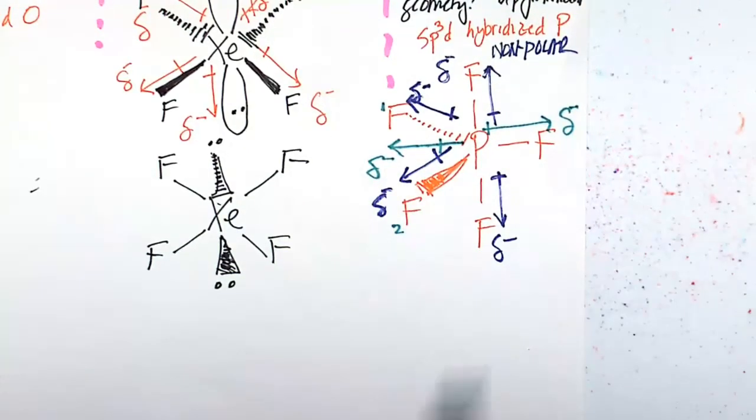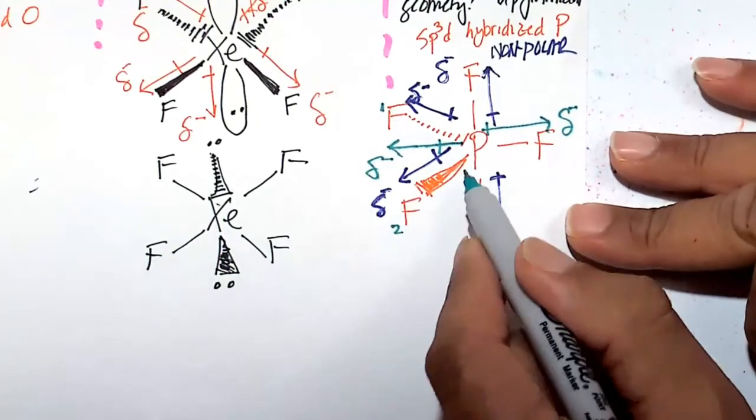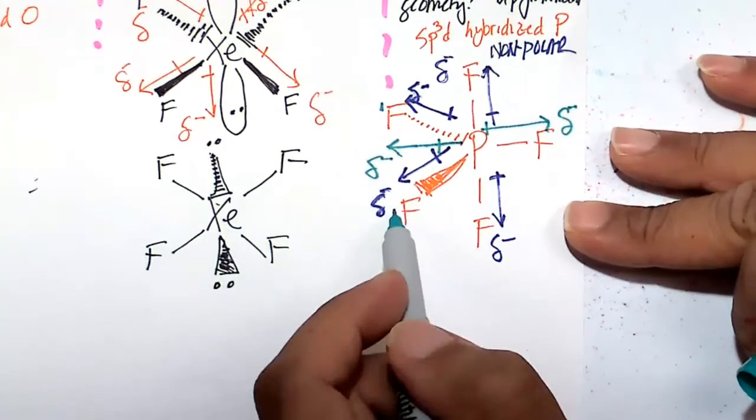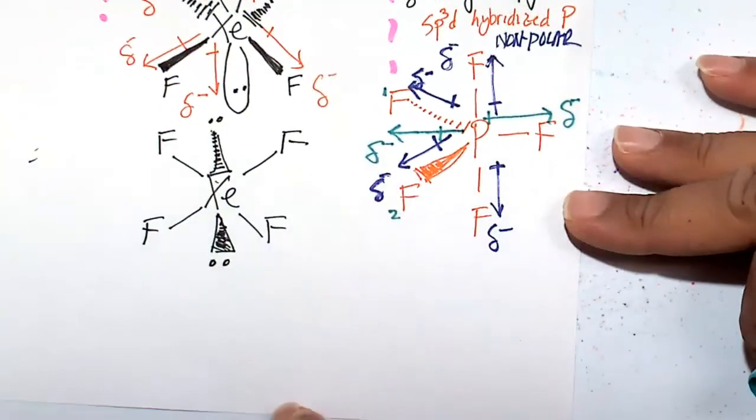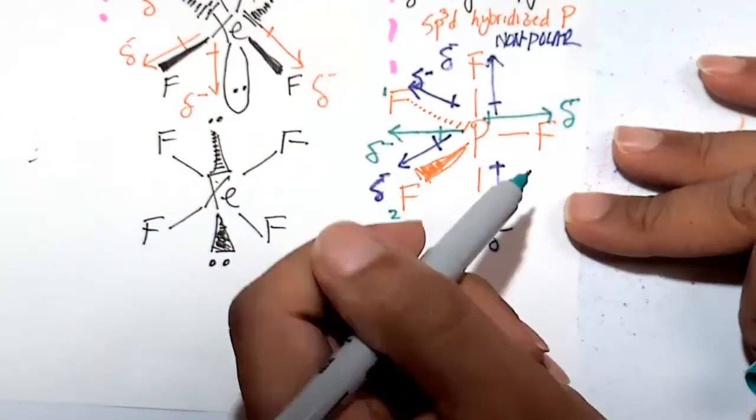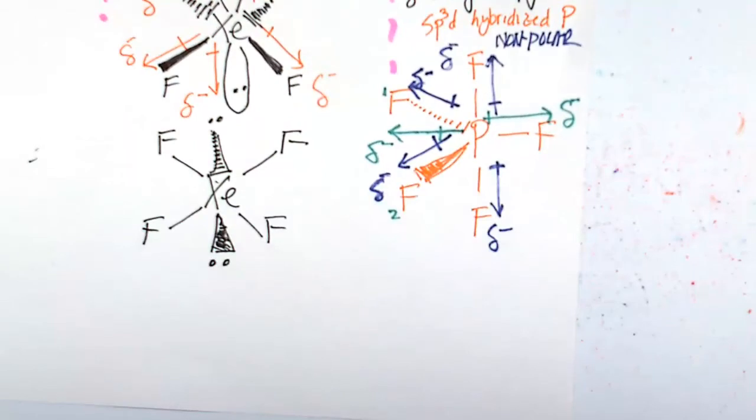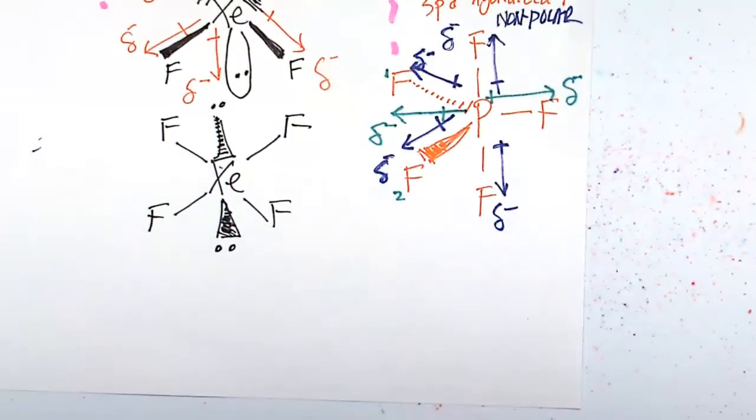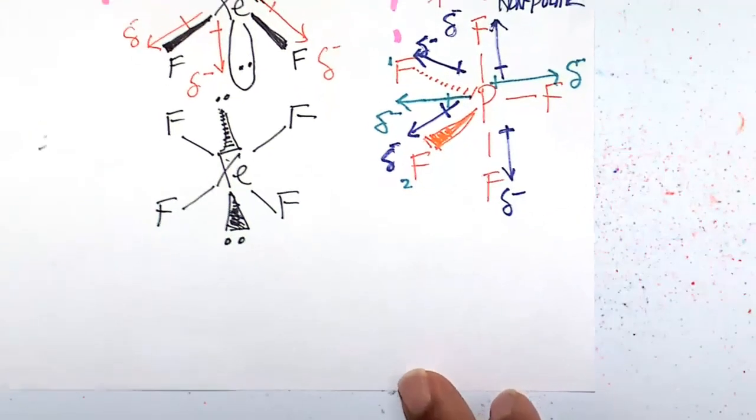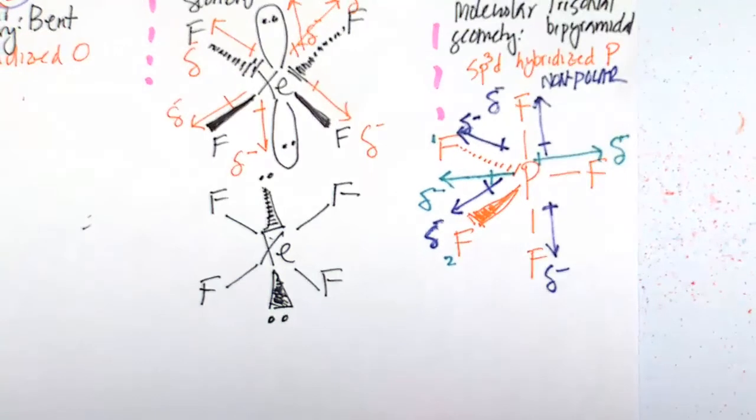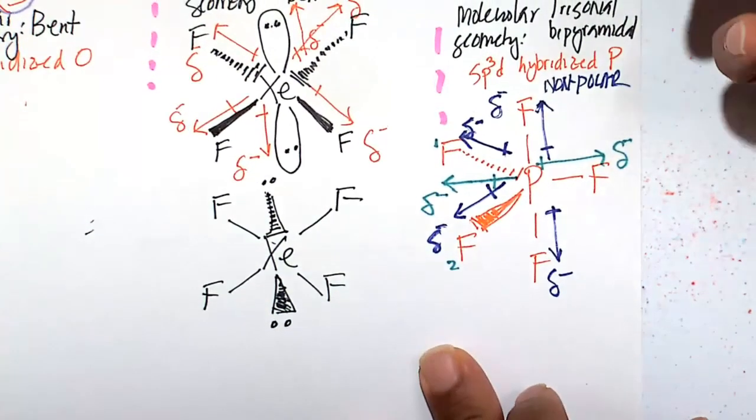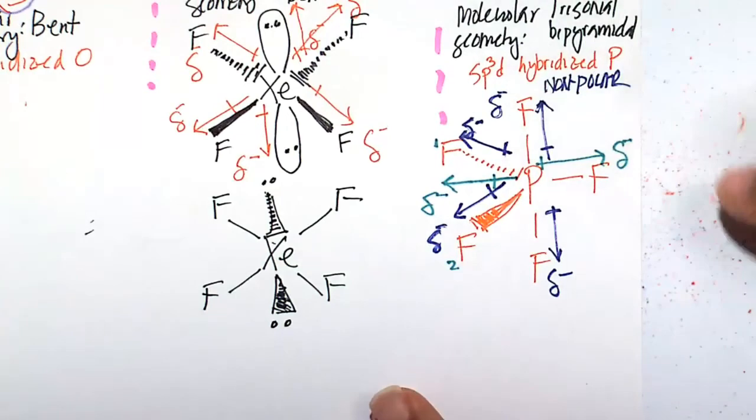So the greens cancel out, the blues actually cancel out because one's pointing up, one's pointing down. But the angle of this pull versus the angle of those pull, of those fluorines 1 and 2, when you sum up those vectors, it cancels out the pull from this fluorine. So this actually, phosphorus pentafluoride, phosphorus pentachloride, phosphorus pentaiodide, that is a non-polar molecule with an SP3D hybridized central atom. The molecular geometry is trigonal bipyramidal.